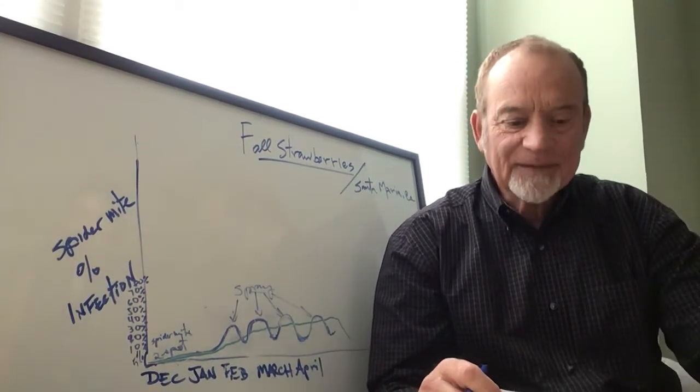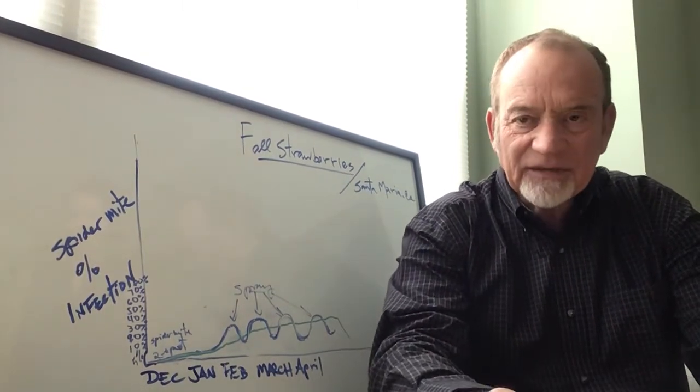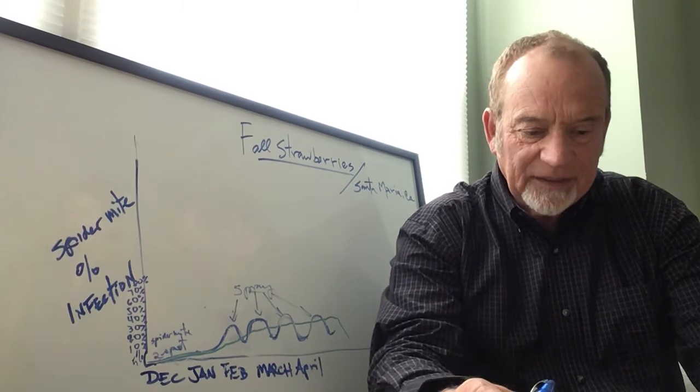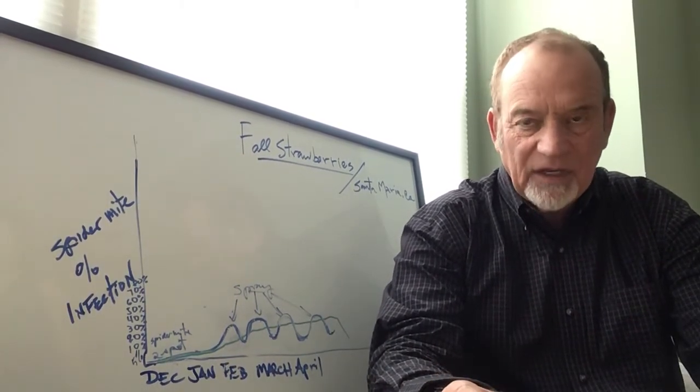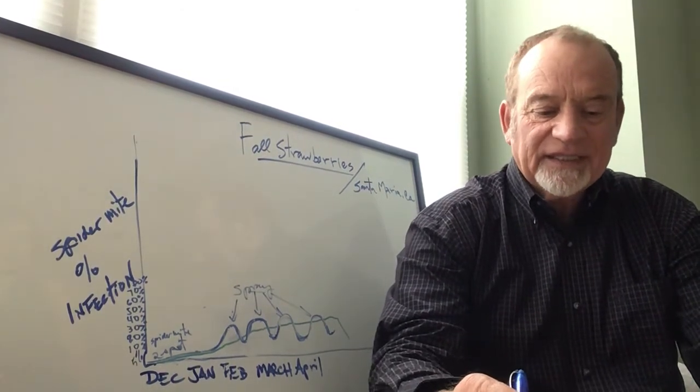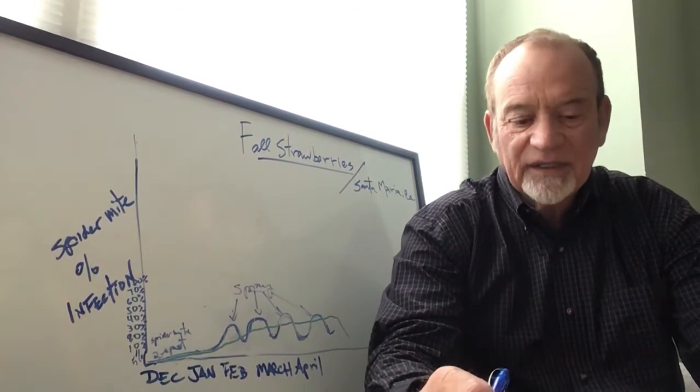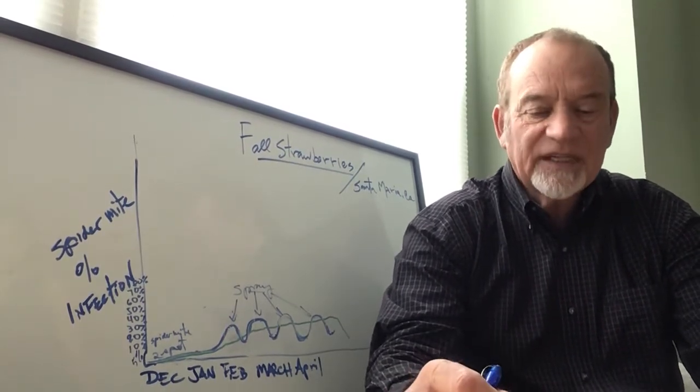I'll start with the life cycle of the two-spot. The eggs will overwinter on the transplants and will hatch when we have summer-like temperatures: 75 degrees to highs, 50% lows with high relative humidity.